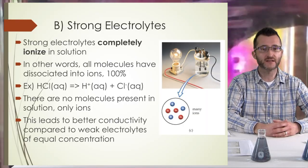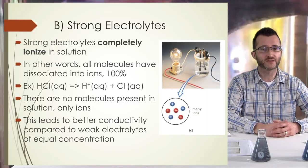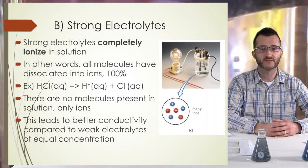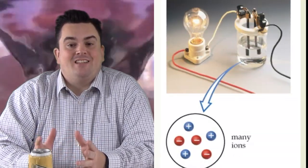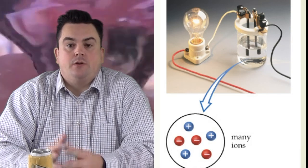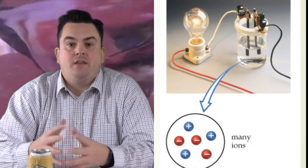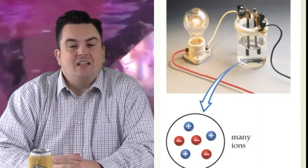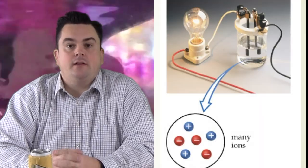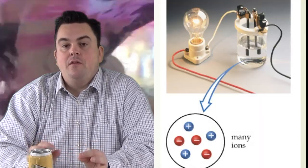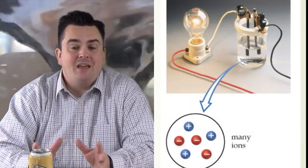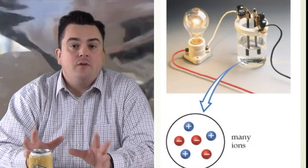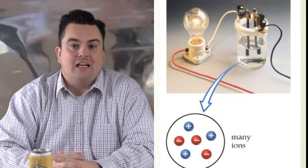This leads to better conductivity compared to weak electrolytes of equal concentration. Looking at the image to the right, we have an example of a strong electrolyte — the light bulb is lit up, so we know that solution is conducting. In the particle diagram below, you'll notice every particle is an ion; we no longer have any molecules, meaning everything has completely ionized.